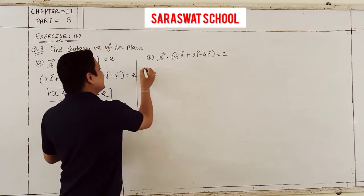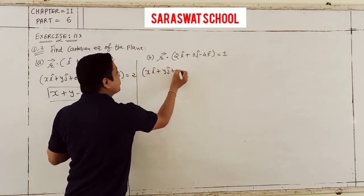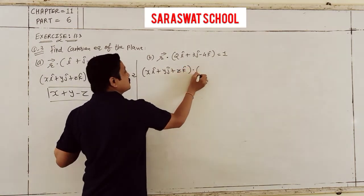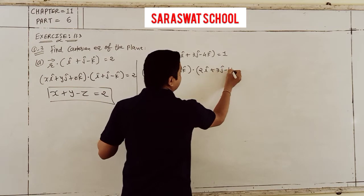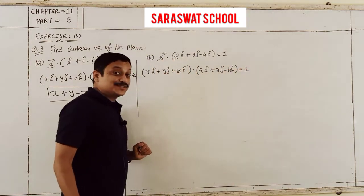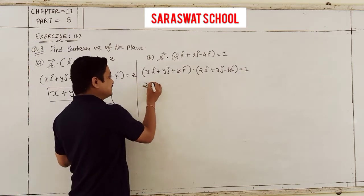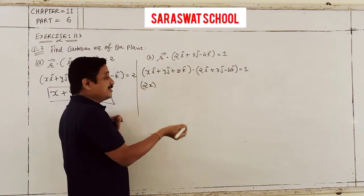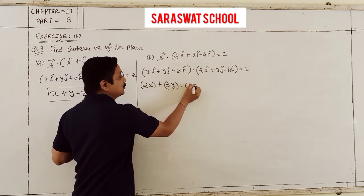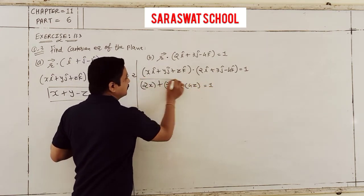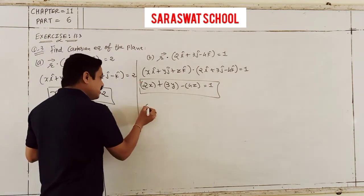Second, same here: (xi plus yj plus zk) dot (2i plus 3j minus 4k). Simple dot product: 2x plus 3y minus 4z is equal to 1. That's your Cartesian equation of the plane.